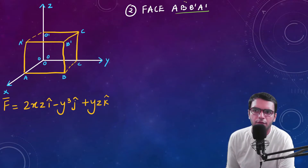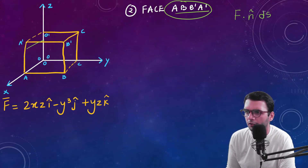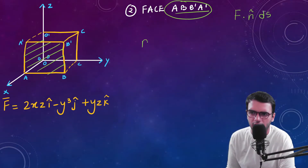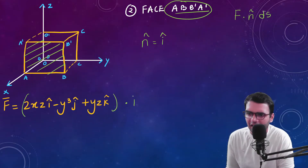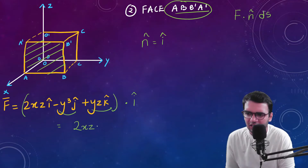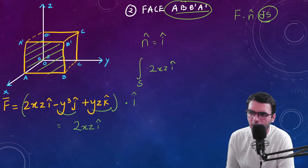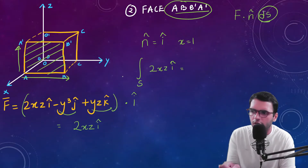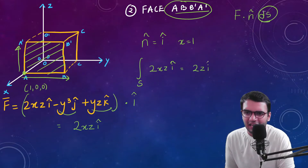Now let us evaluate F dot n-cap dS over the front face. On the front face the normal vector is the positive i-cap. Taking the dot product of F with i-cap, the j and k terms vanish, leaving 2xz times i-cap. The coordinates here give x equals 1, so substituting we get 2z.